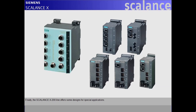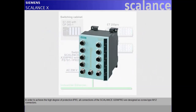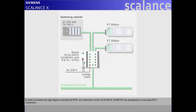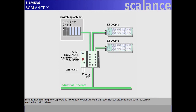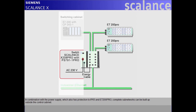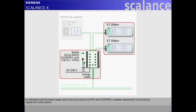Finally, the Scalance X200 line offers some designs for special applications. In order to achieve the high degree of protection IP65, all connections of the Scalance X208 Pro are designed as screw-type M12 connectors. In combination with the power supply, which also has protection to IP65 and ET200 Pro, complete sub-networks can be built up outside the control cabinet.